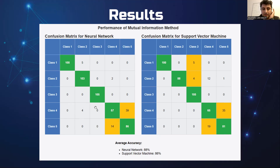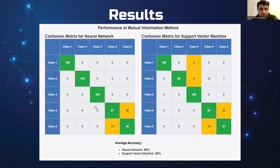For the second selection method — mutual information — both models performed well on the classification task, with the neural network achieving a slightly higher accuracy of 88% compared to the SVM. While both models perform well overall, there are differences across classes: the neural network is better at classifying class 3, while the SVM struggles a bit with class 4.